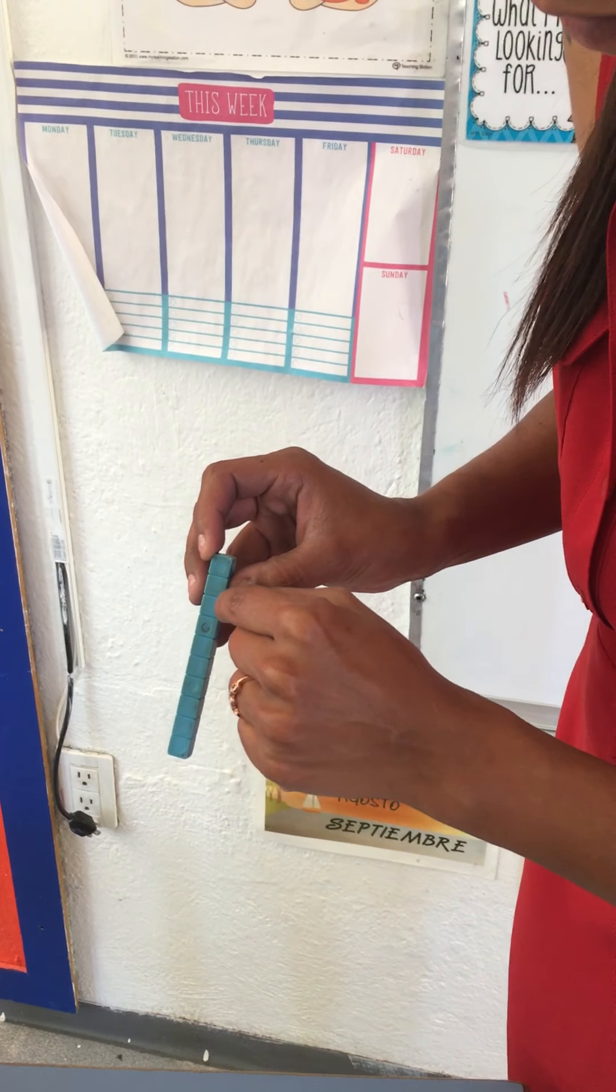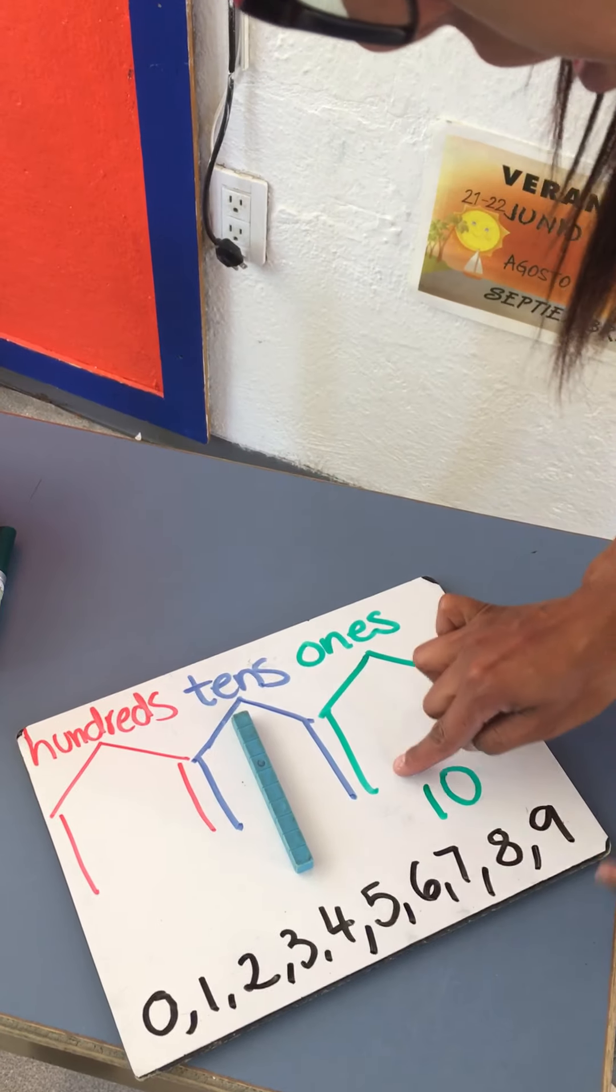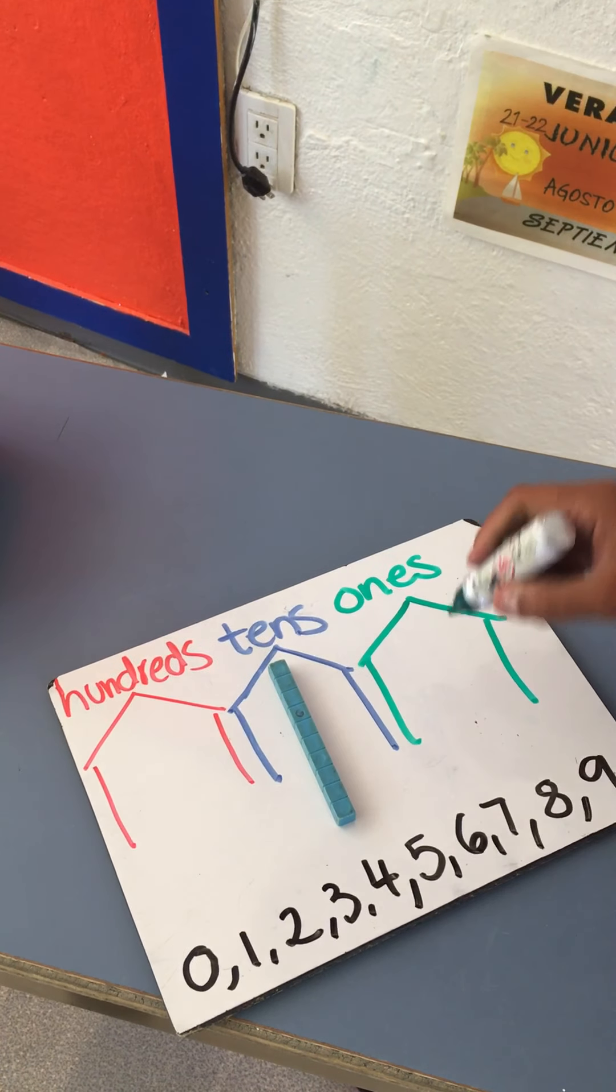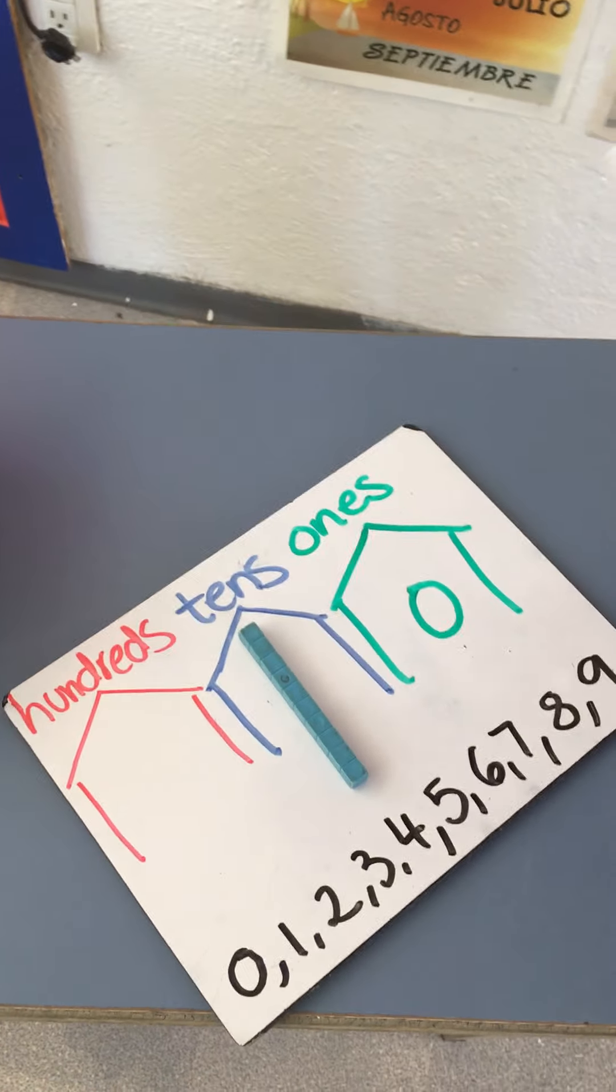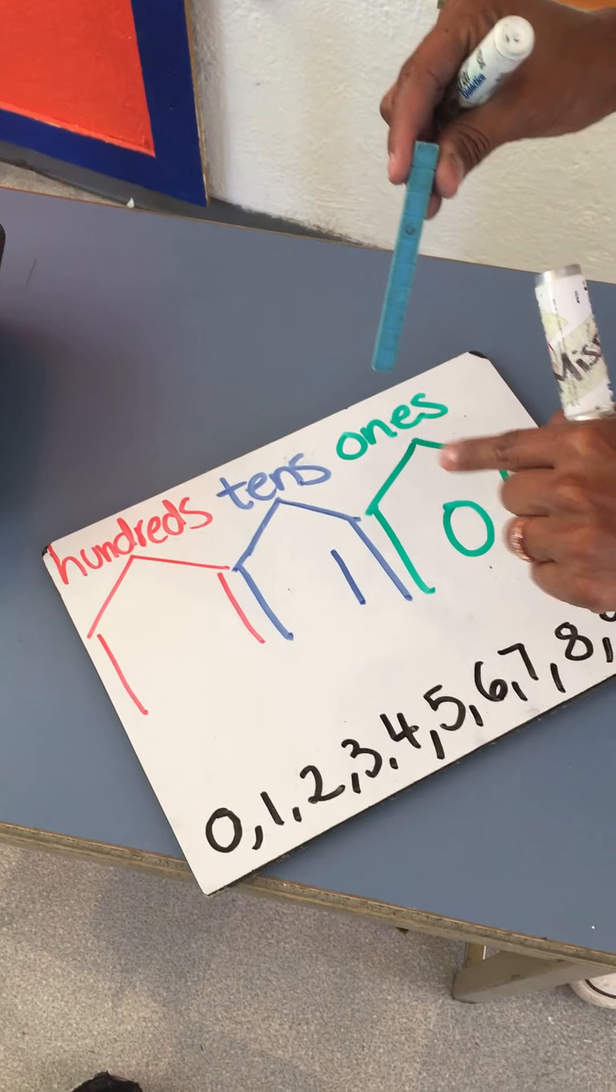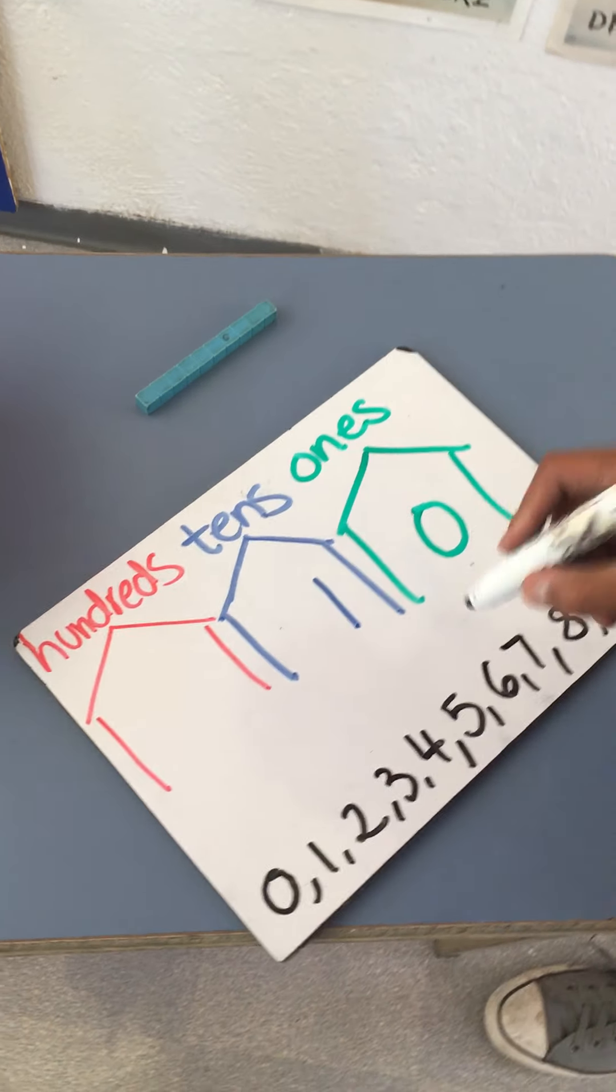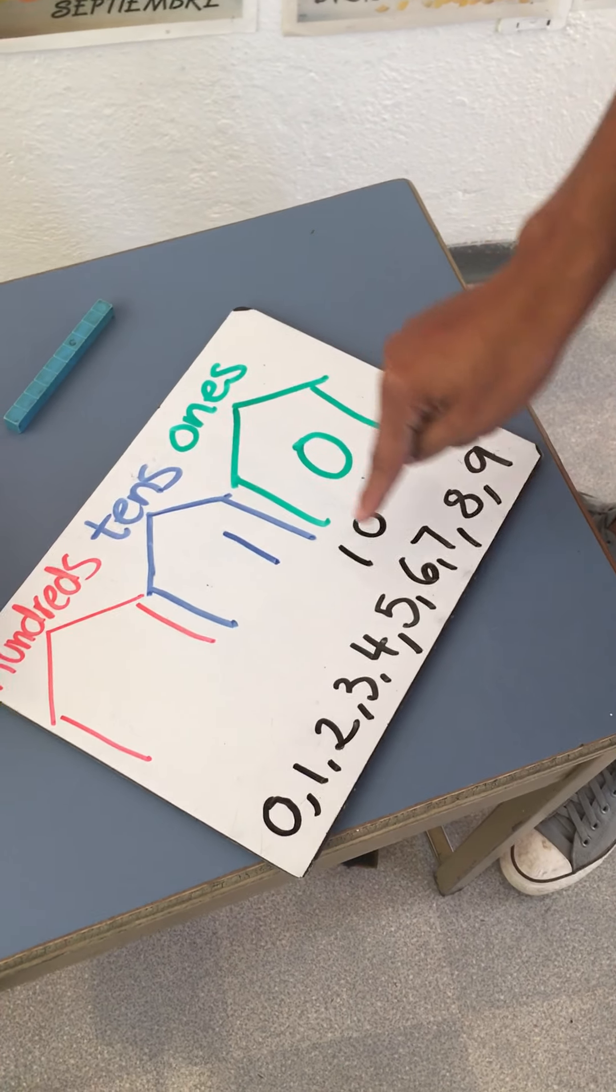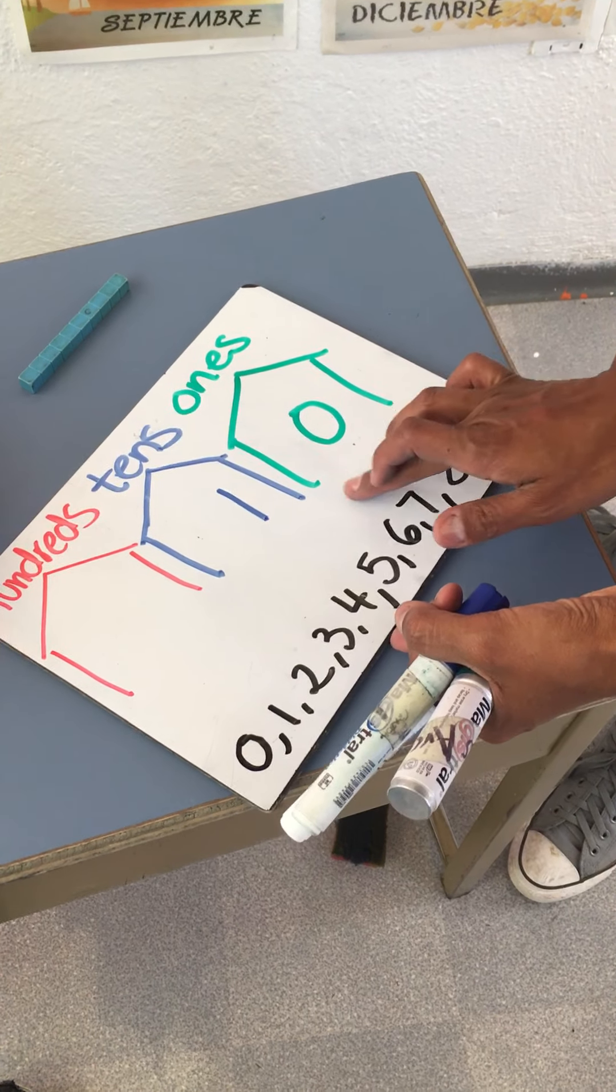They turn into one ten. What do you think this is called? Ten. Because it has one, two, three, four, five, six, seven, eight, nine, ten ones. So this would go here, and the zero could stay here because it's one digit, and the one would go here. We have one ten and zero ones, which makes our number ten.